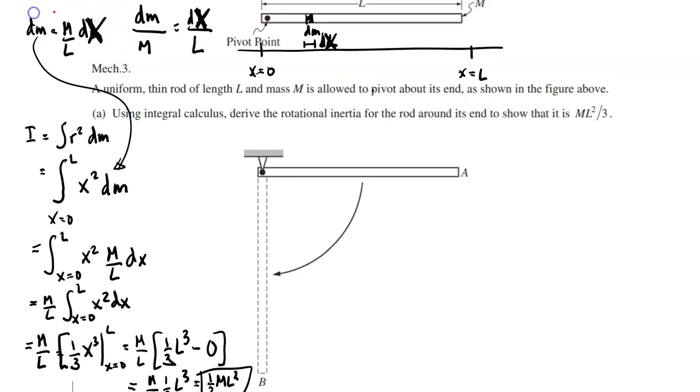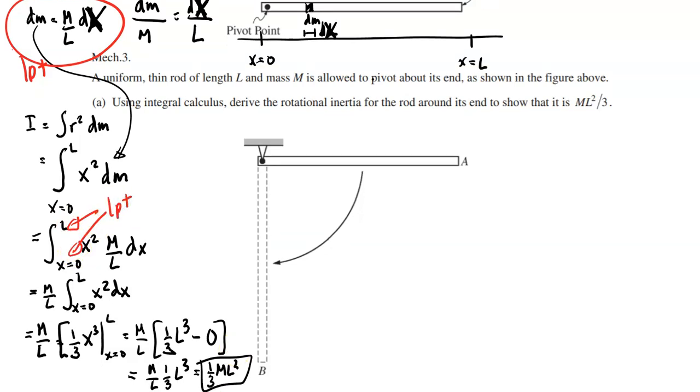Let's go ahead and go through the rubric for this one. Okay. So, you essentially get one point for using the correct dm right there, essentially finding that little tiny mass length. You get one point for the correct limits of integration, and you get one point for using calculus to get our answer. So, this is out of three points.